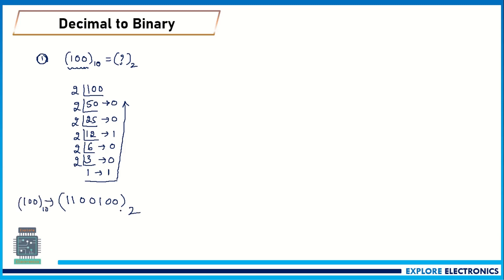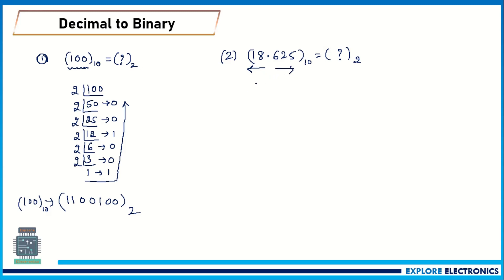Now let us take one more example with a decimal point: 18.625. We need to convert this into binary. Since there is a decimal point, we split the number into the integer part (left of the decimal) and the fractional part (right of the decimal), and handle them separately.